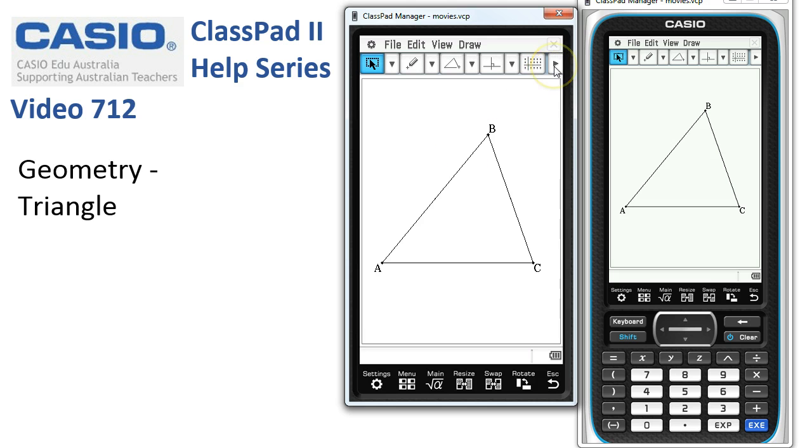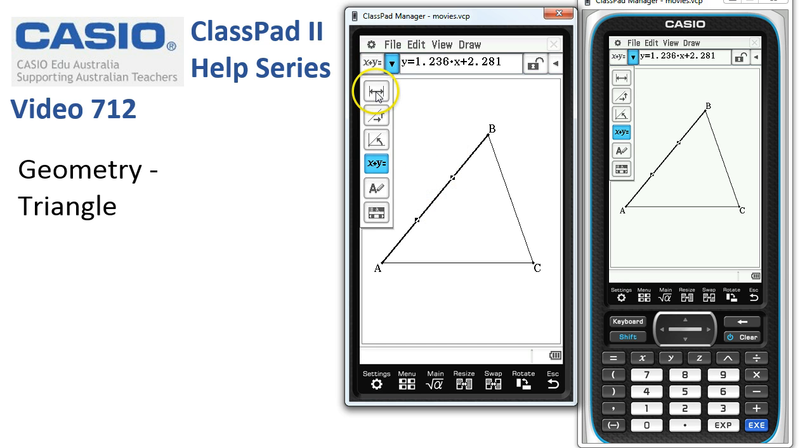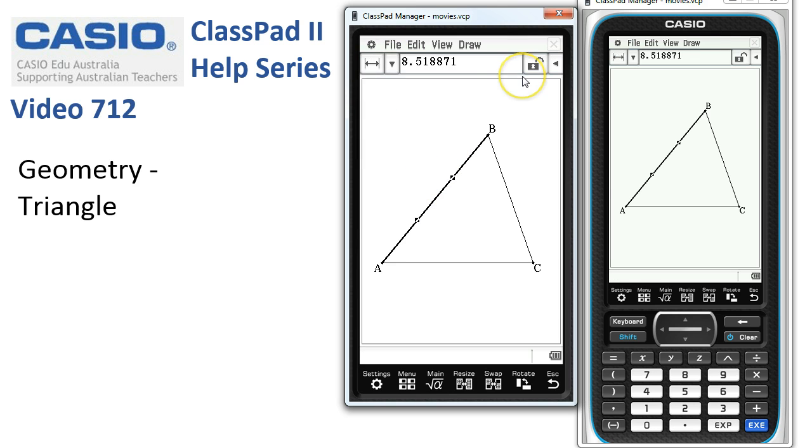Our next job is to head off to the measurement toolbar with this icon at the end of the line. By tapping onto the middle of a side, by default normally the length is the first thing that shows up.